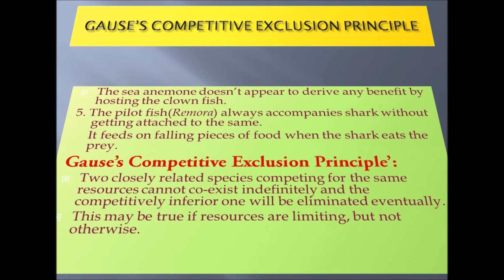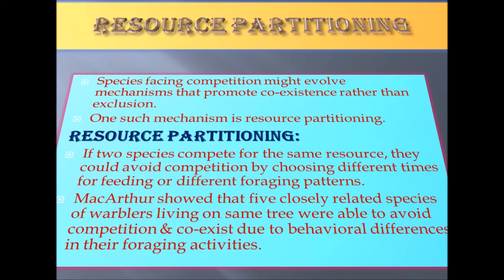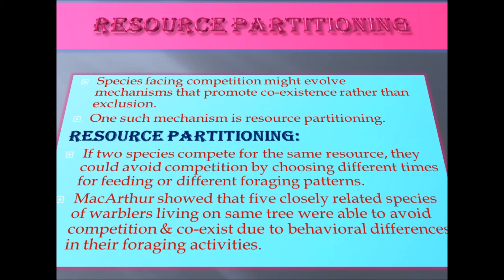Gause's competitive exclusion principle: two closely related species competing for the same resources cannot coexist indefinitely, and the competitively inferior one will be eliminated eventually. This may be true if resources are limiting, but not otherwise. Species facing competition might evolve mechanisms that promote coexistence rather than exclusion. One such mechanism is resource partitioning — if two species compete for the same resource, they could avoid competition by choosing different times for feeding or different foraging patterns.